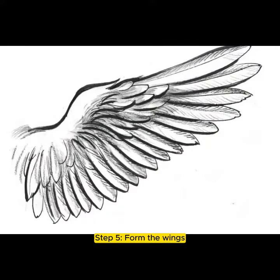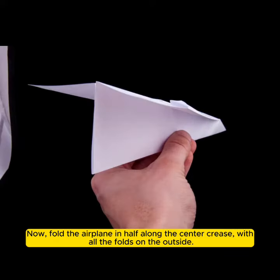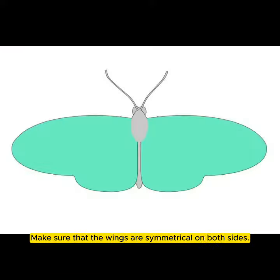Step 5: Form the wings. Now, fold the airplane in half along the center crease, with all the folds on the outside. Make sure that the wings are symmetrical on both sides.